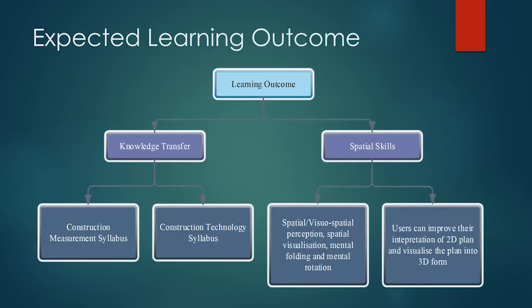The expected learning outcome has been divided into two parts: knowledge transfer and spatial skills. Knowledge transfer refers to knowledge of the subject itself, while spatial skill is associated with interpreting 2D plans and drawings and visualizing them in 3D form. Augmented reality could help enhance visualization of building elements.